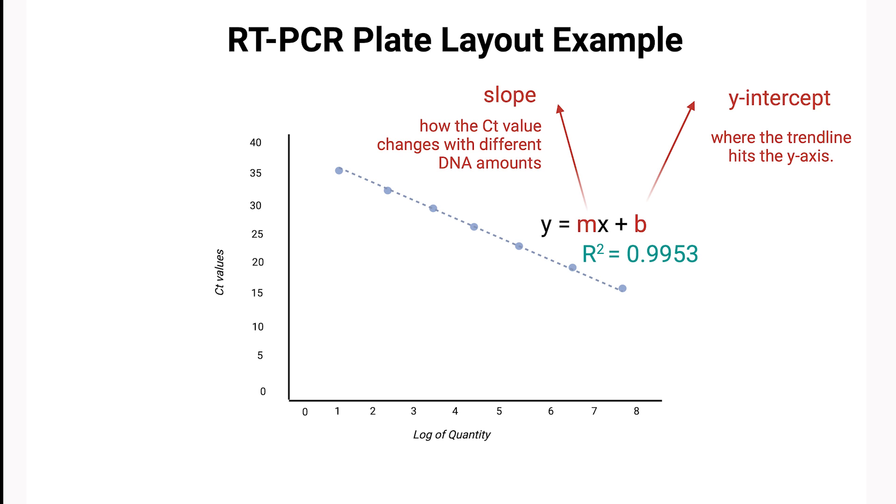Adding a trend line also gives us an r-squared value. The r-squared tells us how well the line fits the data points. A high r-squared close to 1 indicates a good fit, and in qPCR standard curves, it's typical to have r-squared values of 0.98 or higher.